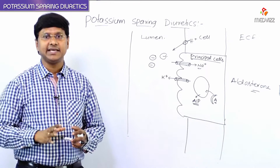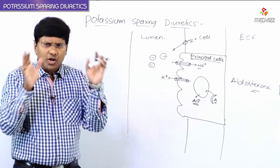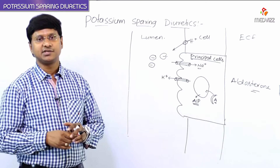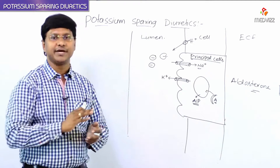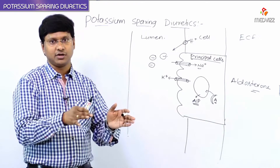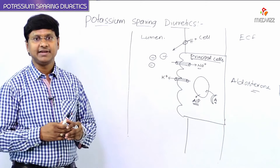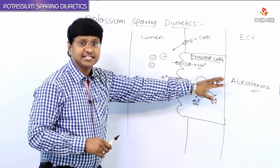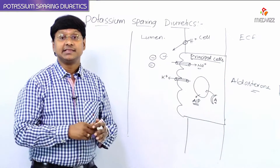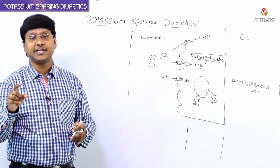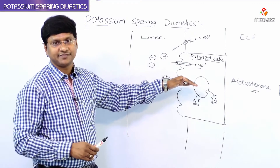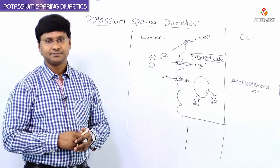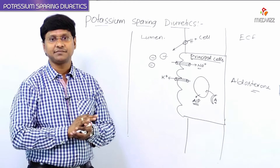Let me discuss what exactly aldosterone does. All the remaining diuretics — carbonic anhydrase inhibitors, thiazide diuretics, loop diuretics — they will act on the nephron from the luminal side. Whereas this particular aldosterone antagonist, they show their diuretic effect not from the luminal surface. They show their effect from the other part of the cell.